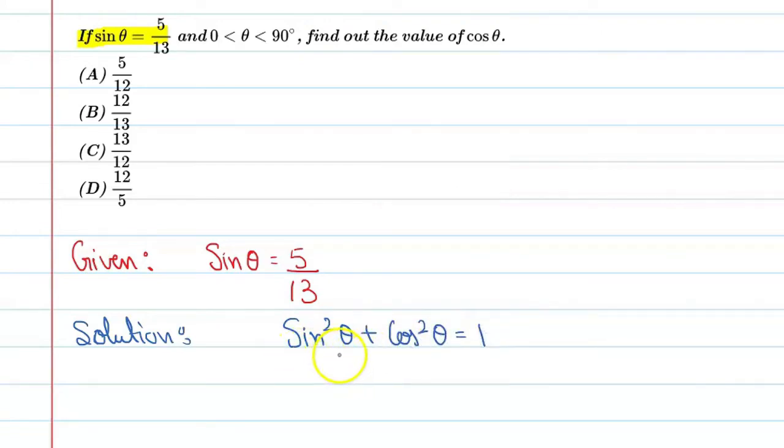All right, so here you can put sin θ value that is 5/13. It is given in the question, all raised to power 2, plus cos²θ equal to 1. Now what do we do?